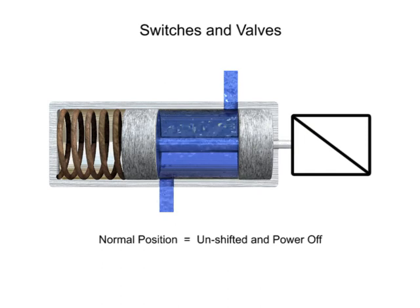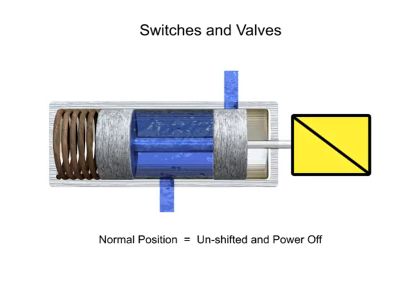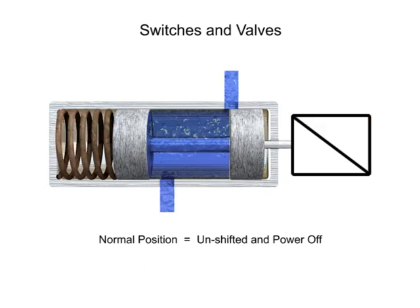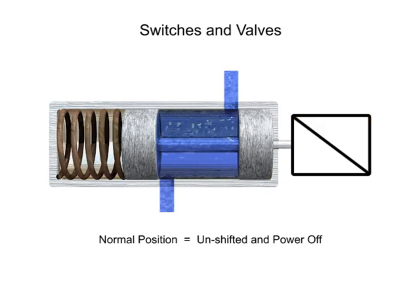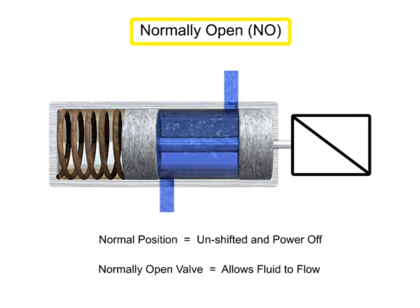The terms normally opened and normally closed are used to describe the condition of a valve when it is in the normal position. For this valve, the normal position allows unrestricted fluid flow through the open ports. Therefore, this valve is a normally open valve.